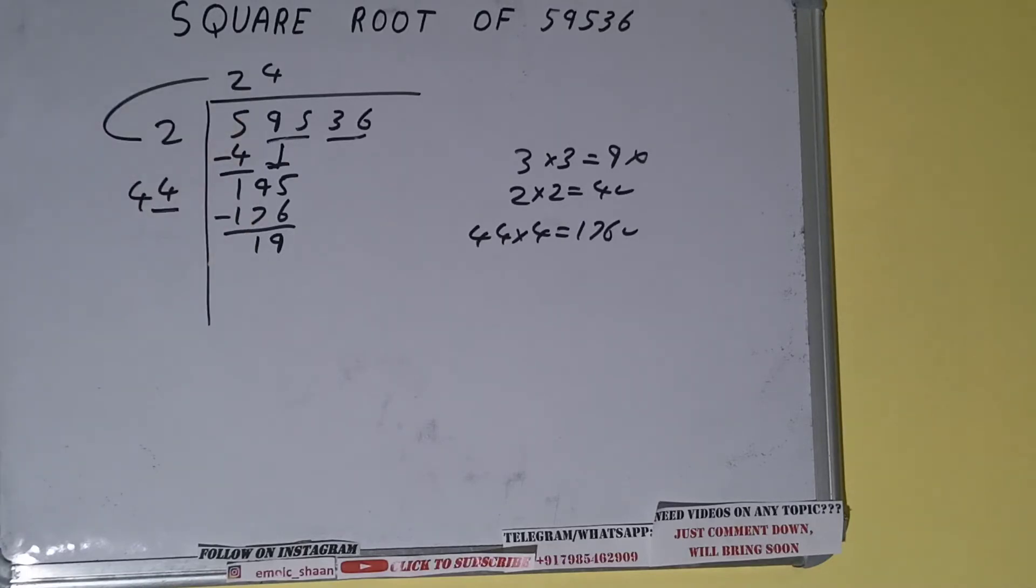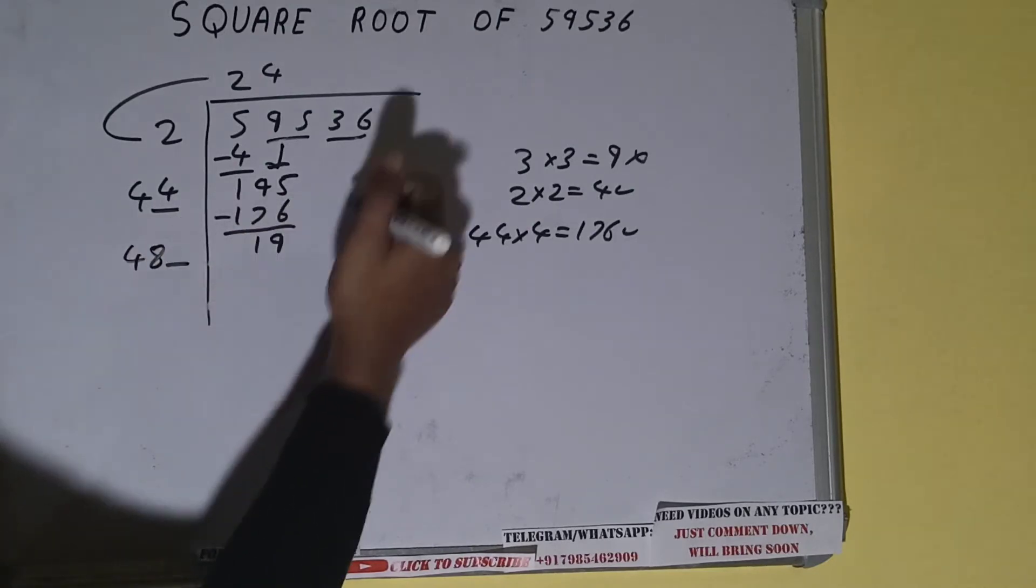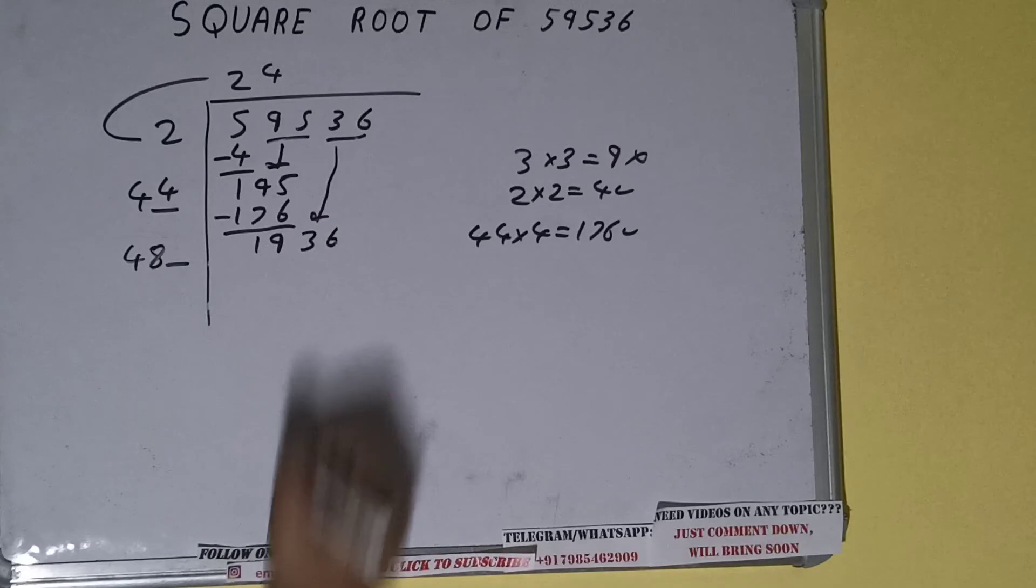Now 44 into 4 we did, so add both. So 44 plus 4 will be 48. Write it here and keep a digit extra, and this number we need to make it big. So bring the next pair down and it will be 1936.